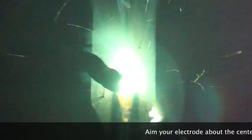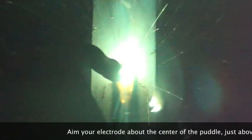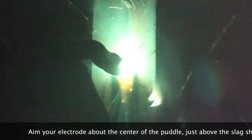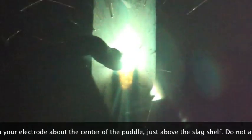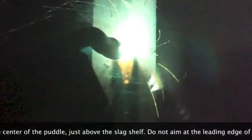Once you get the puddle established and you get the slag starting to form behind you then you can start to ease out and get your stick out to the normal three quarters to an inch.